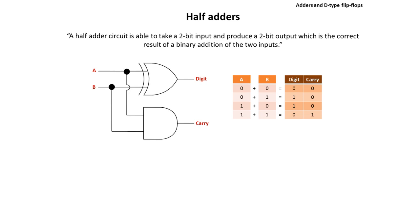So if we input 0 and 0 into A and B, the output — the value of 0 plus 0 — would be 0 and there would be nothing to carry. If we choose 0 and 1, the output value would be 1 with nothing to carry. Again, if we flip it and we have 1 and 0, the digit output would be 1 with nothing to carry.